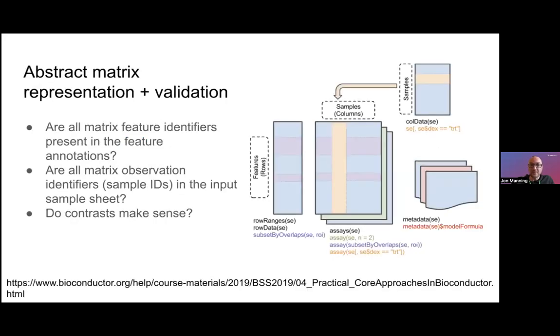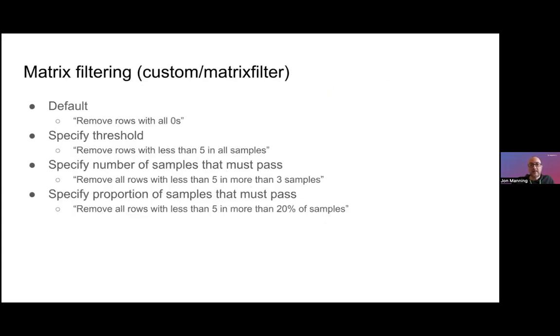Before any matrix gets to go further through the workflow, we have to do this validation. So just to emphasize that a bit more, we have to check that the feature annotations that we provided are compatible with the rows of the matrix, that the sample annotations are compatible with the columns of the matrix, and that the variables that we've used in defining our contrast are actually present in the sample sheet, for example. So all that happens before anything else goes through the workflow.